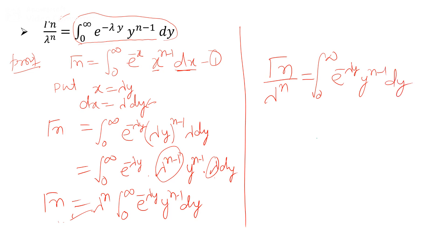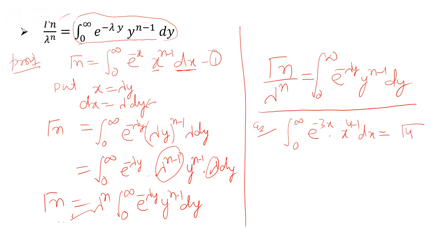As an application: if we have the integral from 0 to infinity of e raised to power minus 3x, x raised to power 4 minus 1, dx, we directly write the value as Gamma(4)/3⁴. There is no need to expand or compute the integration manually — you directly write that value using this property of the gamma function.